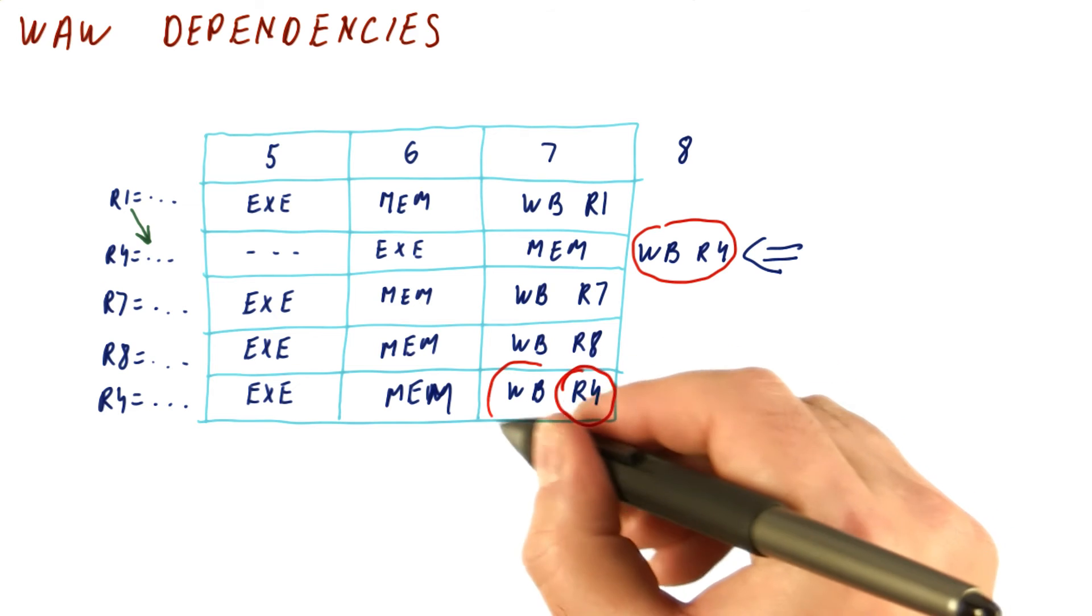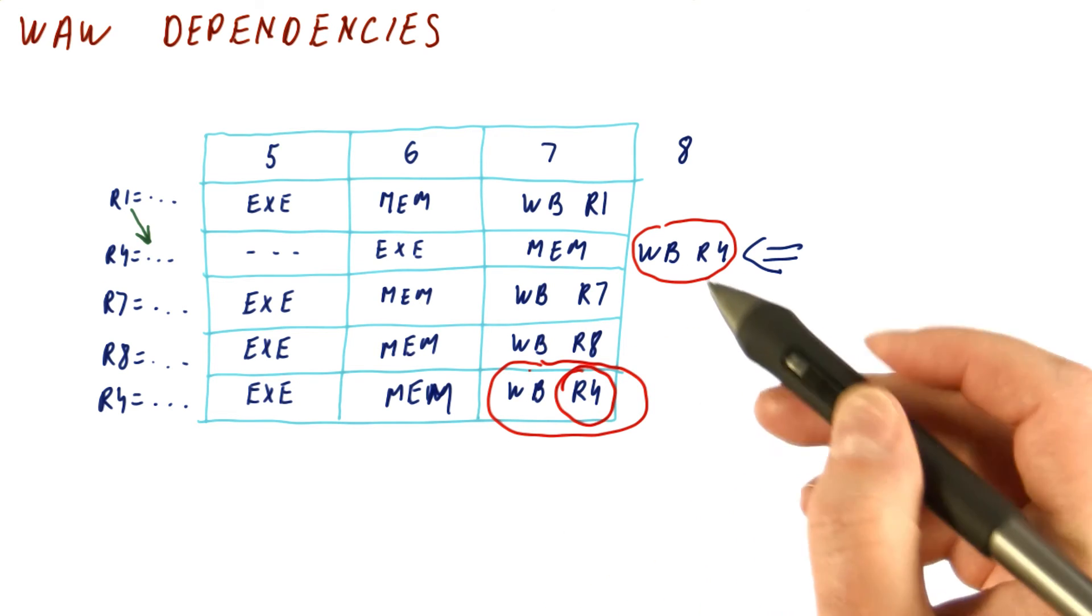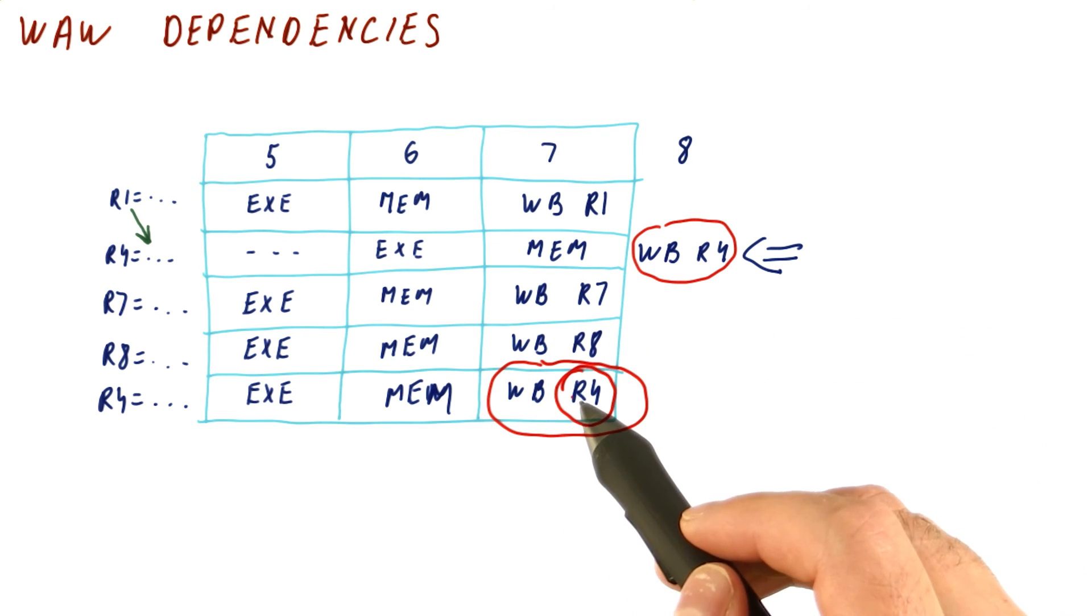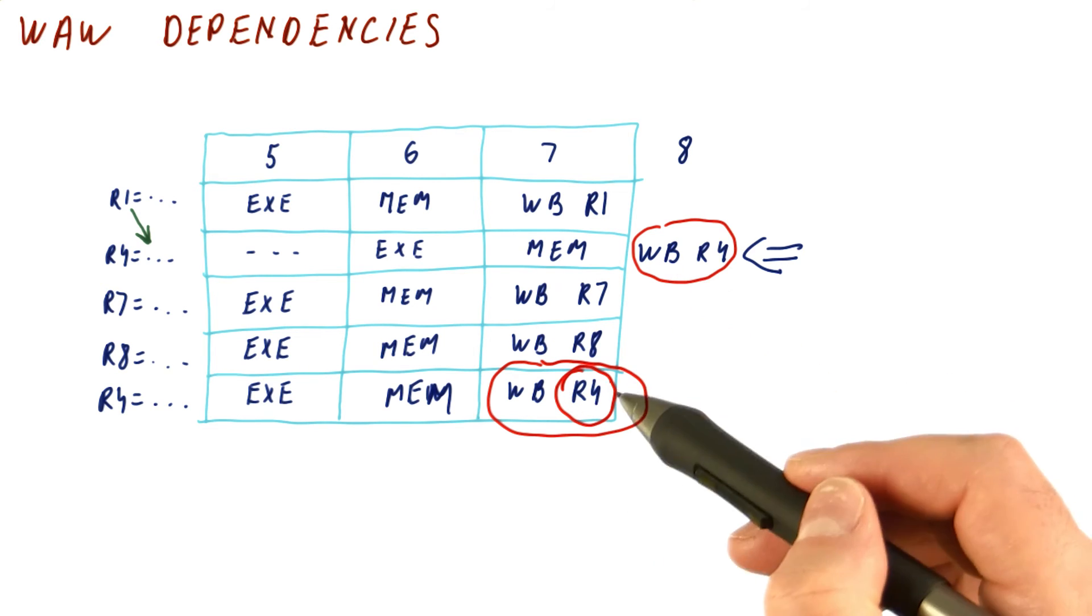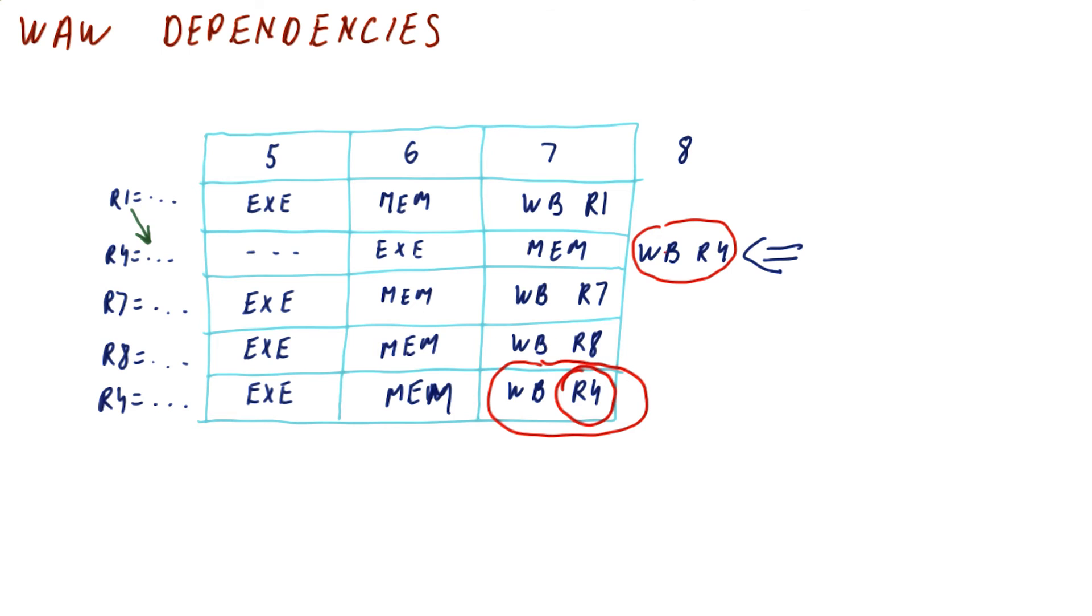This is the fifth instruction, but it writes in the seventh cycle. So basically, we have actually written the result in the wrong order. I mean, it's an order different from the order in which they were supposed to execute in the program.